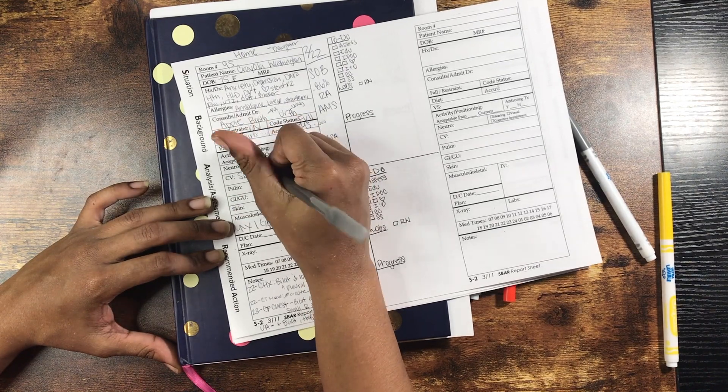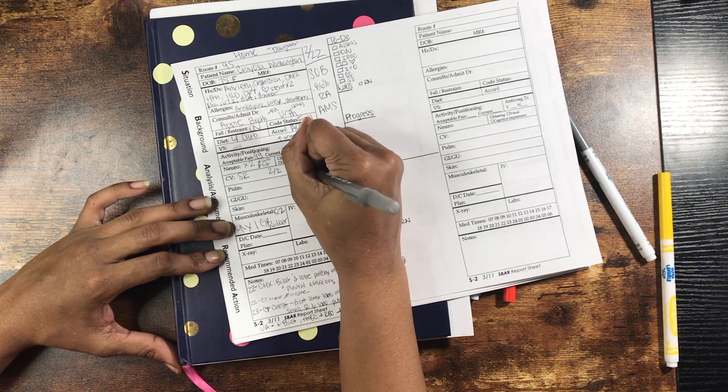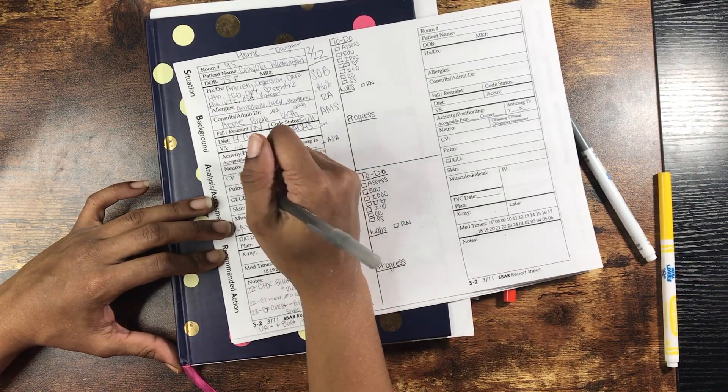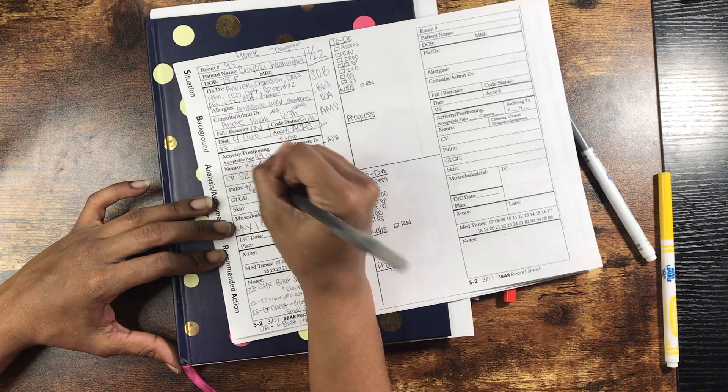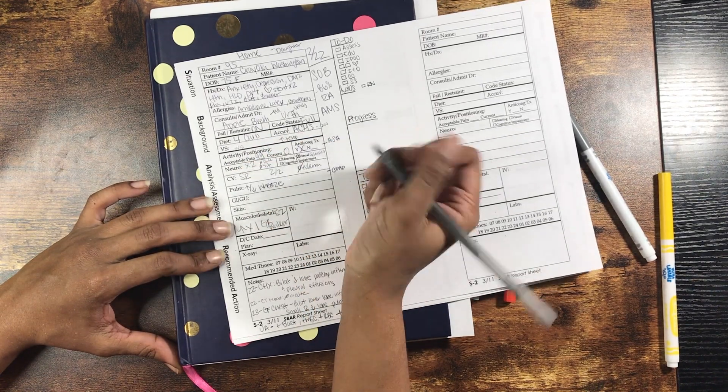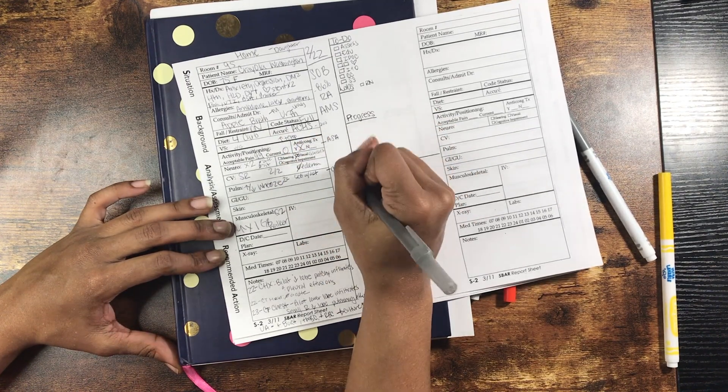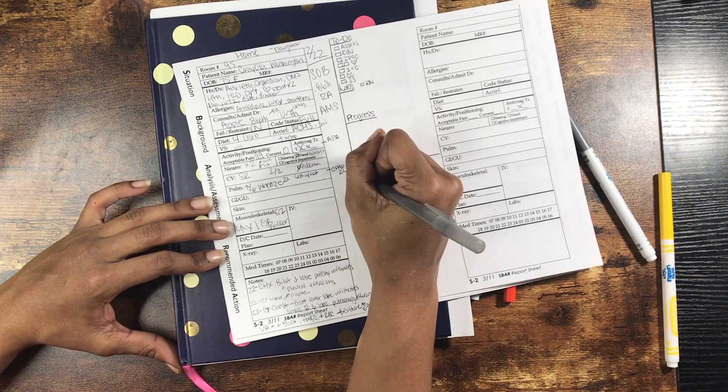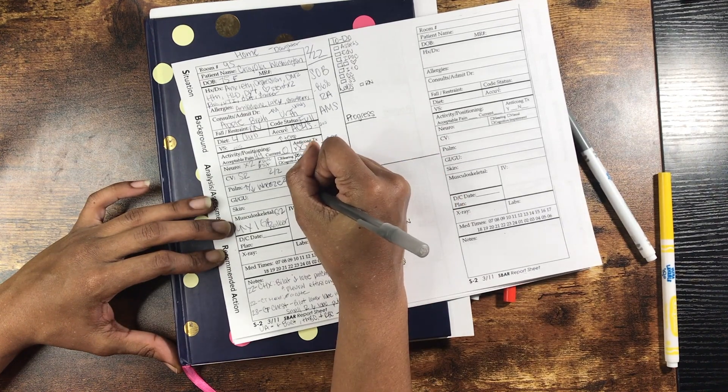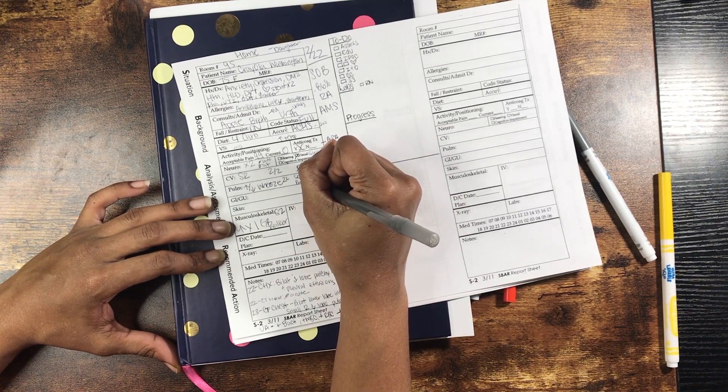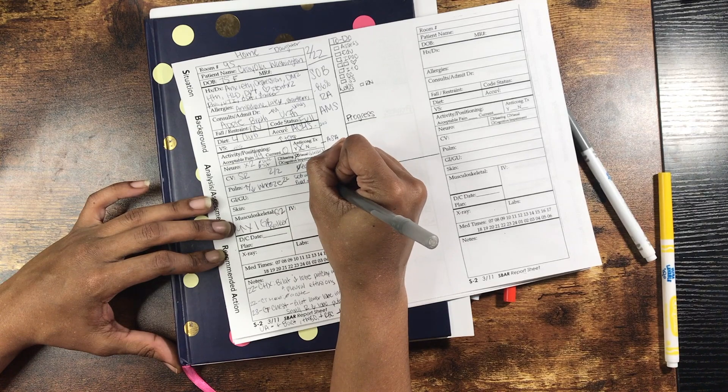On telemetry, she is sinus rhythm, two over two pulses, no edema. She has inspiratory and expiratory wheezes and gets really short of breath with activity. She's at two liters nasal cannula and she also needs two liters at night with her CPAP machine. She has a productive cough and it's been thick and green.